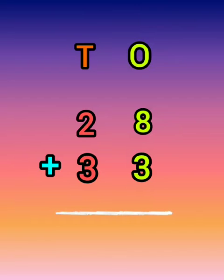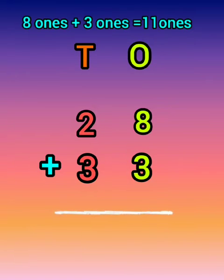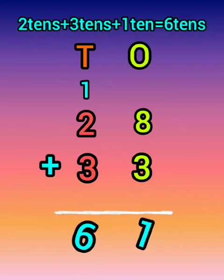Add the ones: 8 ones plus 3 ones equal to 11 ones. Write 1 in the ones column and carry the ten to the tens column.